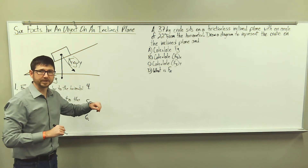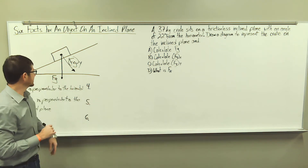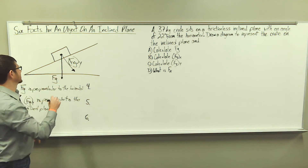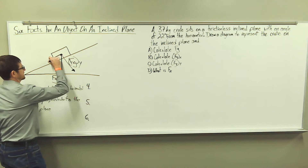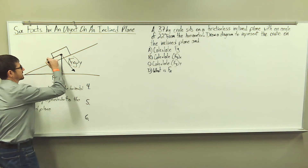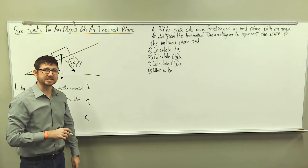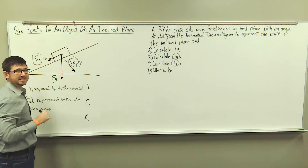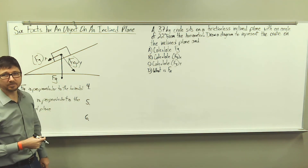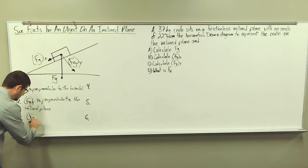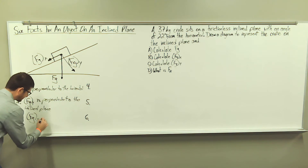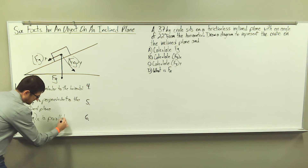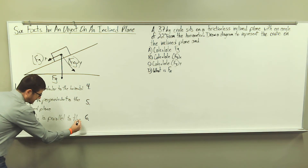Now let's talk about the X component of weight force. It's going to point down and it is parallel to the inclined plane. We're going to label it F sub G sub X, because this is the X component of the object's weight force. So F sub G sub X is parallel to the inclined plane.